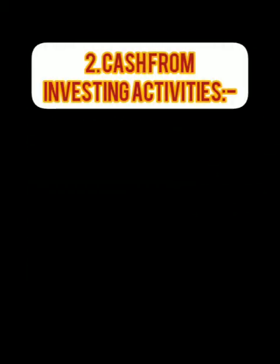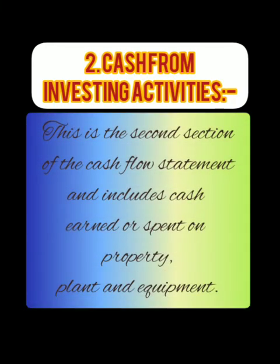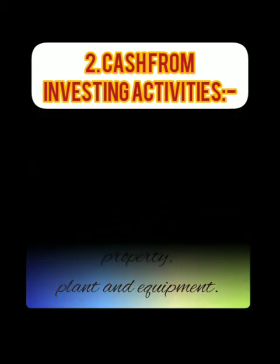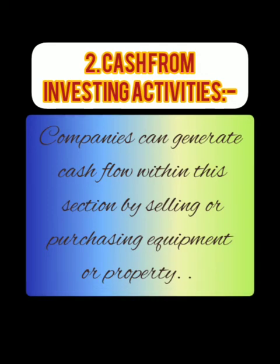Next is cash flow from investing activities. This is the second section of the cash flow statement and includes cash earned or spent on property, plant and equipment. Companies can generate cash flow within this section by selling or purchasing equipment or property.